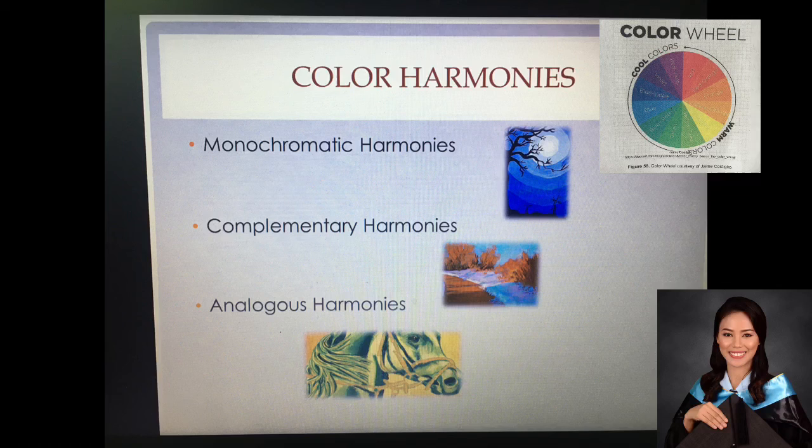And lastly, we have the analogous harmony. Analogous harmony makes use of two colors beside each other in the color wheel. Meaning to say, the colors used in the artwork are the colors that are adjacent in the color wheel. In the example here, we have color yellow-green and yellow. If you have noticed in the color wheel, they are adjacent. That is analogous harmony.